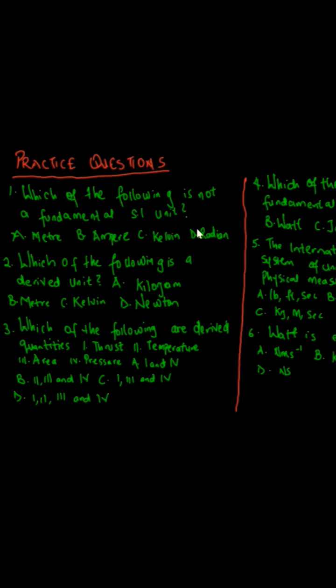The first question is: which of the following is not a fundamental SI unit? Option A is meter, B is ampere, C is kelvin, and D is radian.